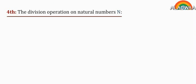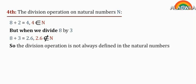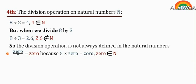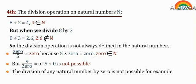Property 4: the division operation on natural numbers. For example, 8 divided by 2 equals 4, and 4 belongs to N. But when we divide 8 by 3, the answer is 2.6, and 2.6 does not belong to N. So the division operation is not always defined in the natural numbers. Note: 0 divided by 5 equals 0, because 5 times 0 equals 0, and 0 belongs to N. However, 5 divided by 0 is not possible. The division of any natural number by 0 is not possible. For example, 4 divided by 0 is not possible.